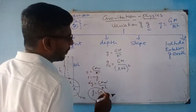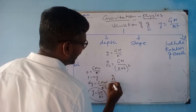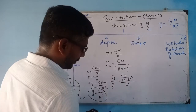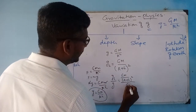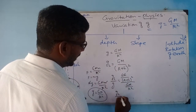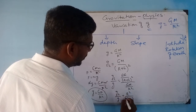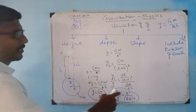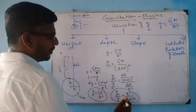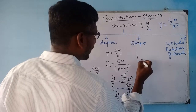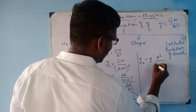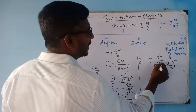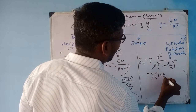I can also rewrite this as g(h) = g × R²/[R²(1 + h/R)²], and since R² cancels: g(h) = g × (1 + h/R)⁻². Expanding using binomial expansion, and since h is much less than R, I can remove higher powers. So g(h) = g(1 − 2h/R).